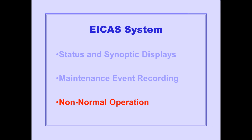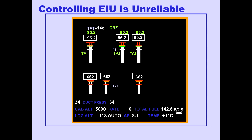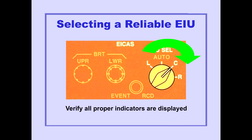Now let's look at ICAST non-normal operation. If any vertical or digital indicator is not displayed, the controlling ICAST interface unit is unreliable. This will occur only if the automatic EIU switching function has failed. A reliable EIU is selected by rotating the EIU selector to left, center, or right, and verifying that the proper vertical and digital indicators are displayed.